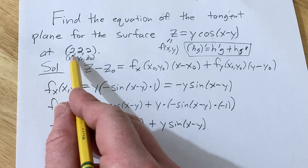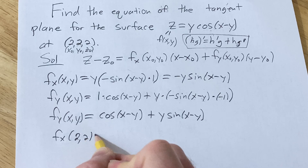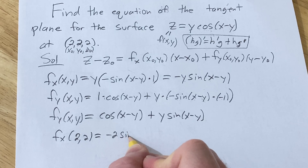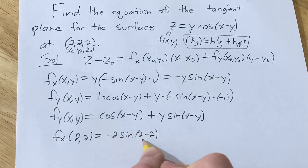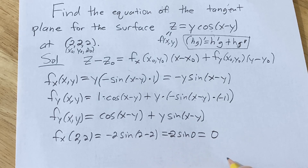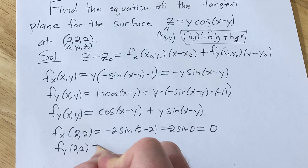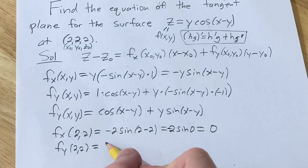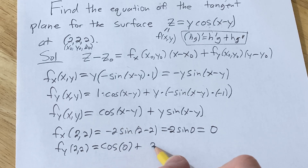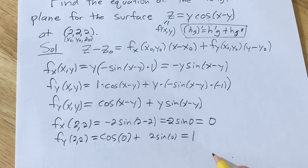At (2, 2): x-naught and y-naught are both 2. So fx at (2, 2) gives us negative 2 sine of 2 minus 2, which is negative 2 sine of 0, which equals 0 — very nice. And fy at (2, 2) gives us cosine of 2 minus 2 plus 2 sine of 0, which is cosine of 0 plus 0. Since cosine of 0 is 1, this is just 1.